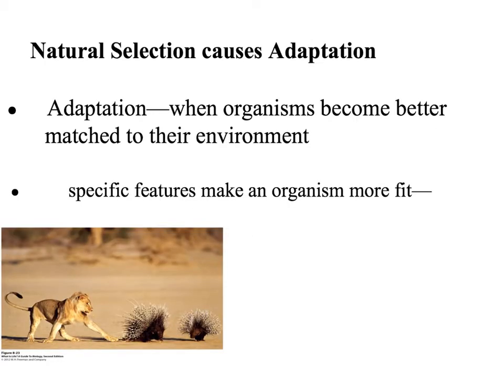The product of natural selection is adaptation. Adaptations are when organisms become better matched to their environment — specific features that make them better able to survive and reproduce in that specific environment. In this picture we see that the porcupine has the adaptation of quills. These quills are sharp and very good at deterring predators, which allows that organism to survive and reproduce more often.